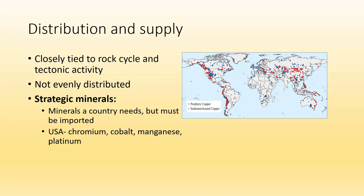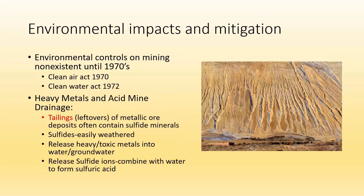The distribution of mineral resources is closely related to the rock cycle and tectonic activity — it's not evenly distributed among different countries. This leads to what we call strategic minerals — minerals that a country needs but must import because they don't have enough domestically. In the United States, our strategic minerals are chromium, cobalt, manganese, and platinum.